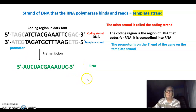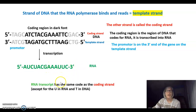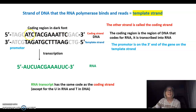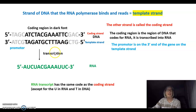Now let's get back to some of our naming. The RNA transcript has the same code as the coding strand of DNA, except replacing the T's in DNA with U's in RNA. For example, the coding strand reads A, T, C, T and the RNA reads A, U, C, U. This is called the coding strand because, although RNA polymerase does not read it, it has the same code of nucleotides as the RNA generated by reading the template strand.